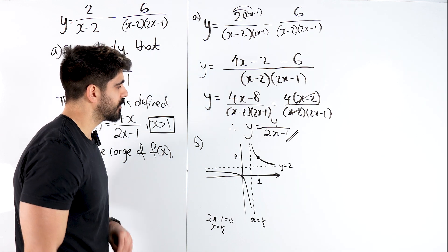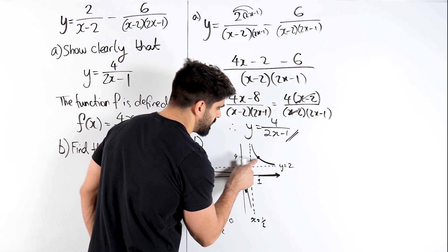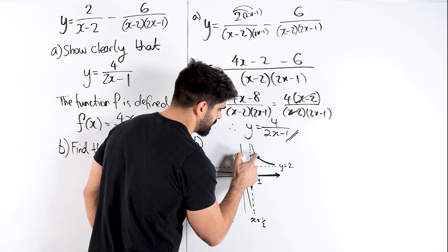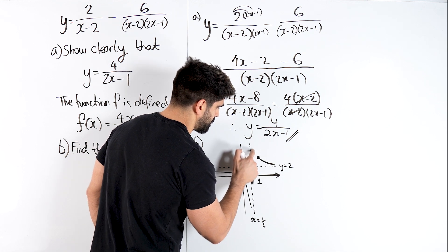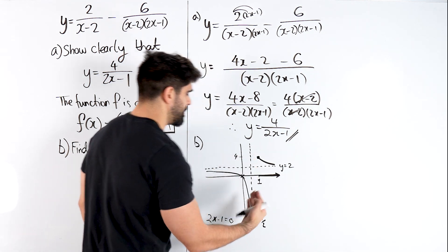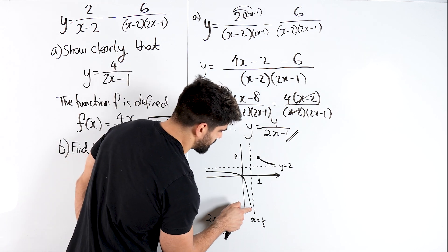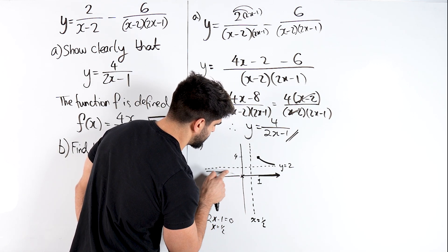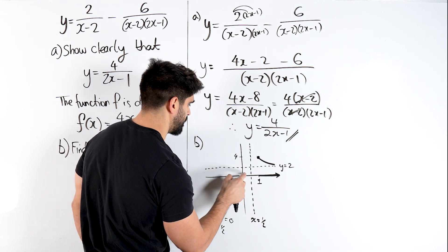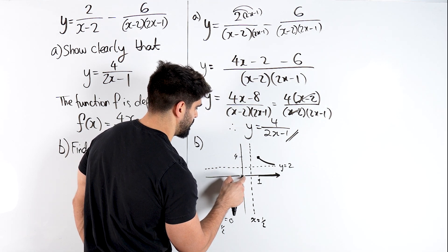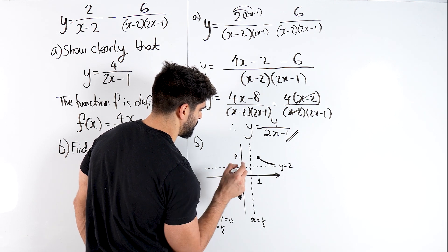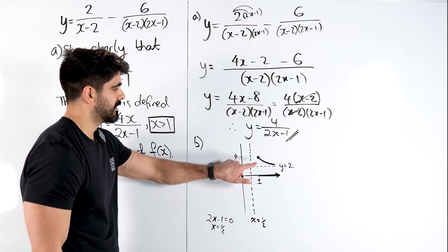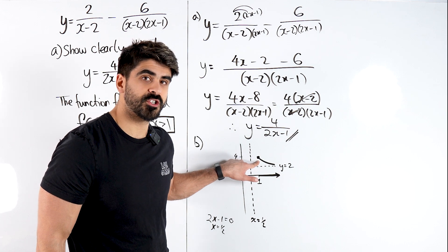Now remember, our graph is only defined from this onwards. So we're basically ignoring this. And this whole bit before doesn't even make a difference. We're not even looking at that part. I drew it just to show you guys how the whole graph even looks. There you go.